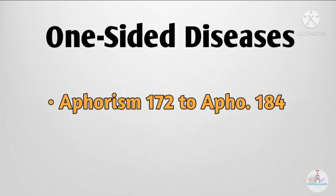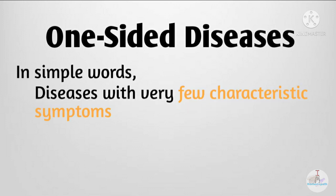Dr. Hahnemann explained about one-sided diseases in aphorisms number 172 to 184 in the sixth edition of Organon of Medicine. Firstly, what are one-sided diseases? In simple words, these are diseases with very few characteristic symptoms — with only one or two characteristic symptoms. One-sided diseases are not related to any left or right side of the body; this is a misconception among many students initially.